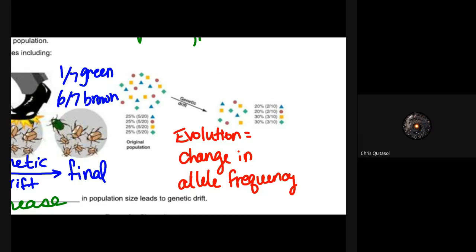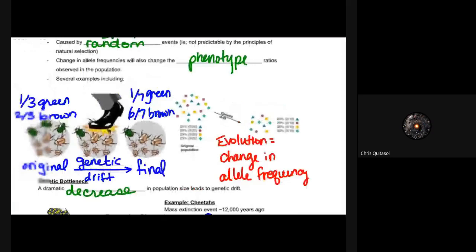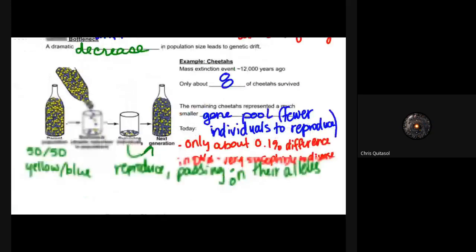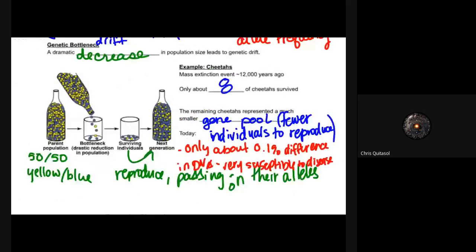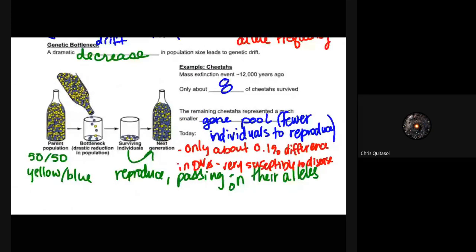Another concept is genetic bottlenecking. Genetic bottlenecking sees a dramatic decrease in population size that leads to genetic drift. Examples are mass extinctions. When we look at cheetahs, it's interesting to think about 12,000 years ago—approximately only eight cheetahs survived a mass extinction event.